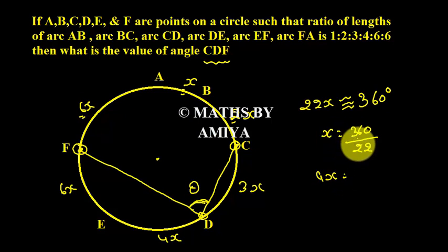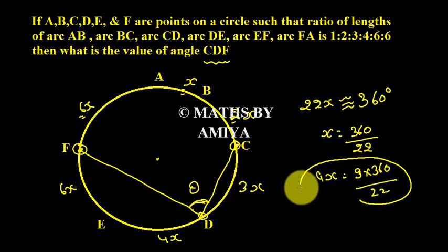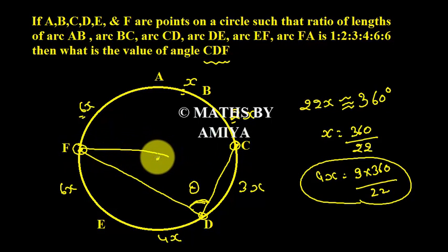Which is nothing but 9 into 360 upon 22, because x is 360 upon 22. So 9x, that is 9 into 360 upon 22, is nothing but the central angle. What is the meaning of central angle? Point C and F created angle at center.